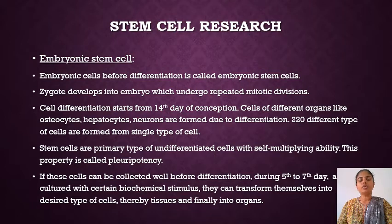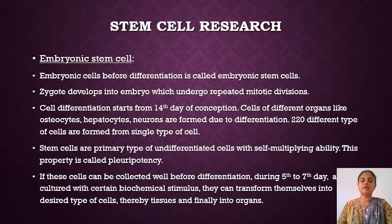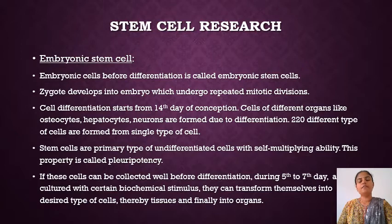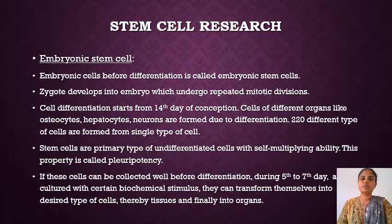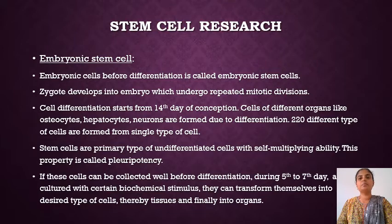A total of 220 types of cells are formed from a single type of cell. This ability of a single cell to develop into different types of cells is called pluripotency. If these cells can be collected well before differentiation begins — that is, during the 5th to 7th day of conception — then by adding certain chemical stimuli, a desired type of cell can be grown, a desired type of tissue developed, and further grown into desired organs, allowing us to repair degenerated parts of any organ.